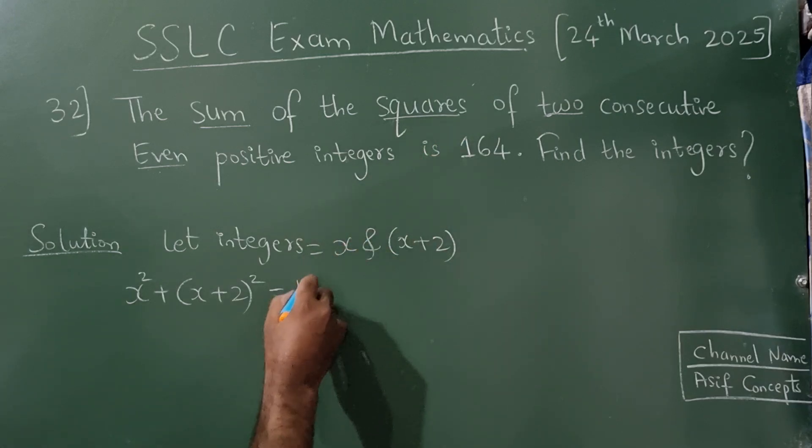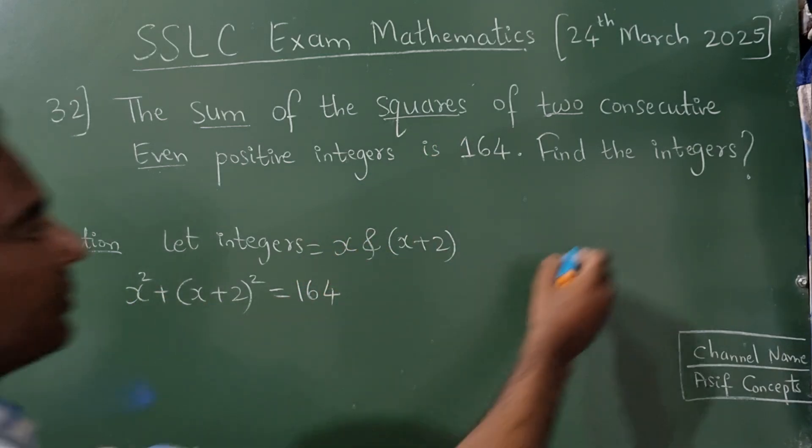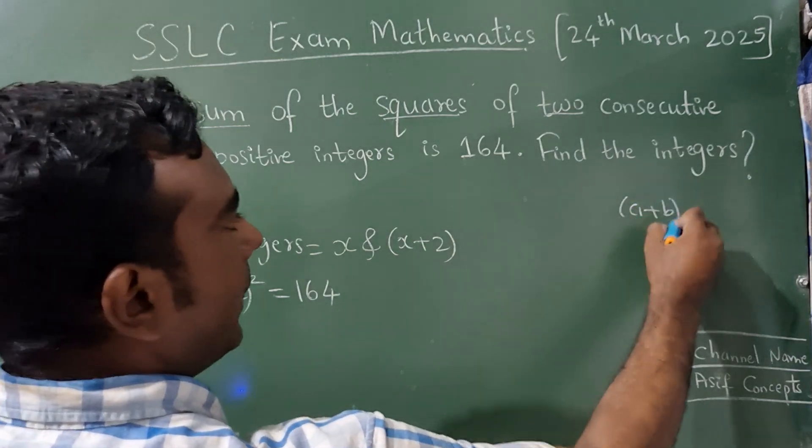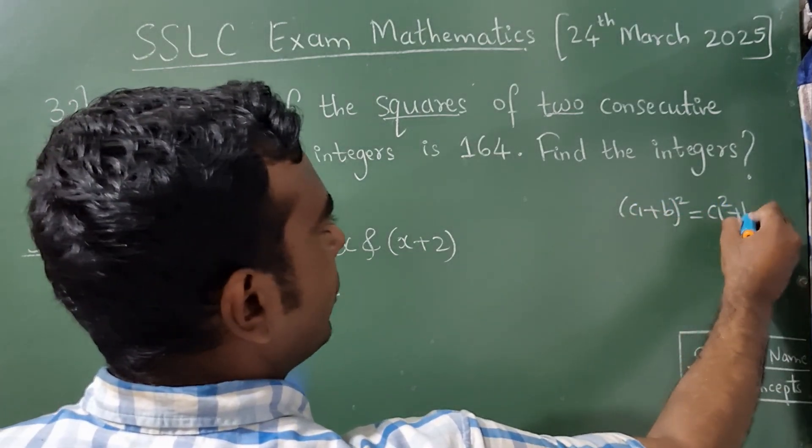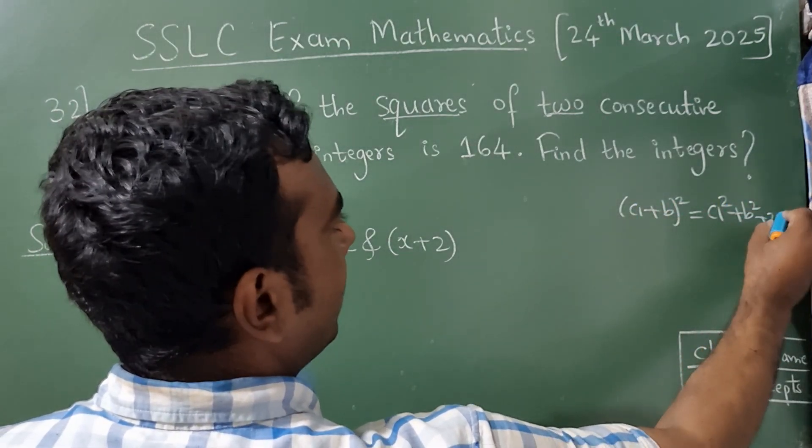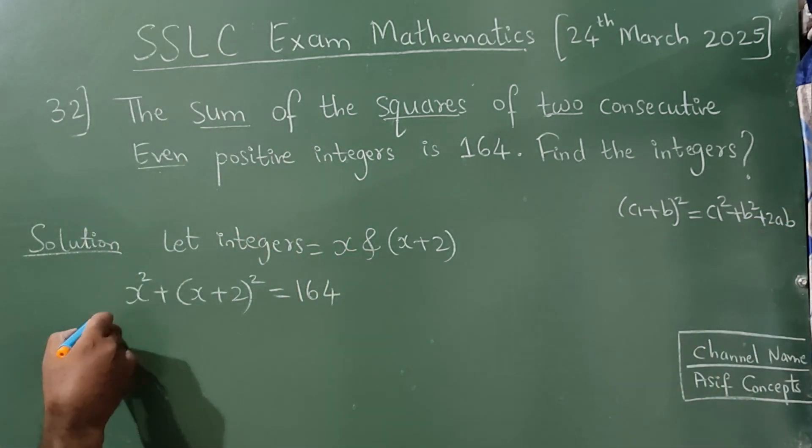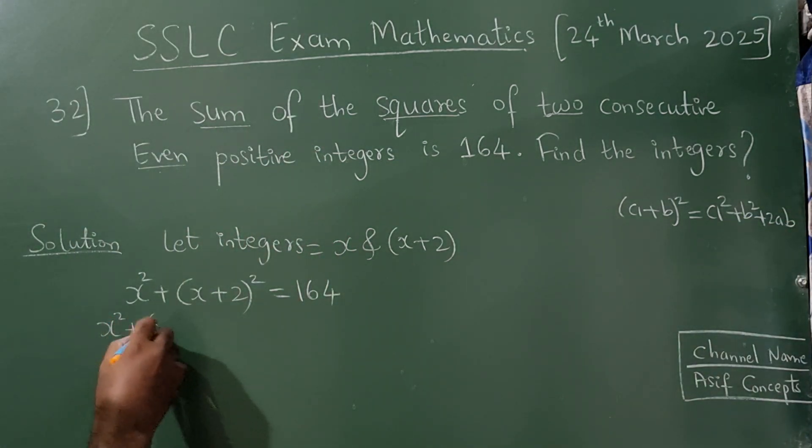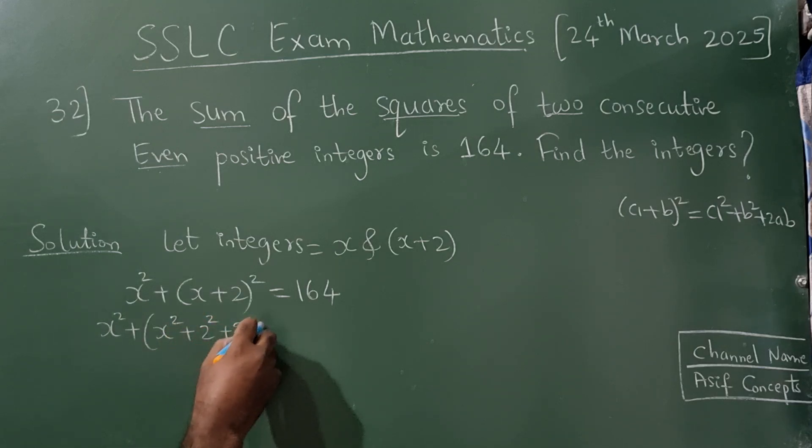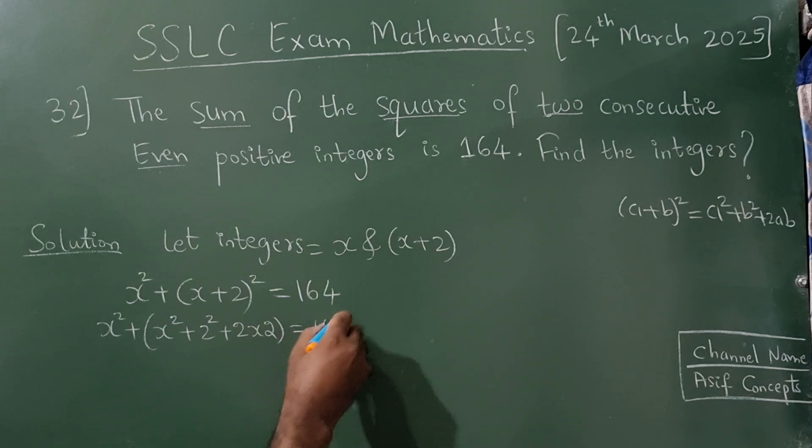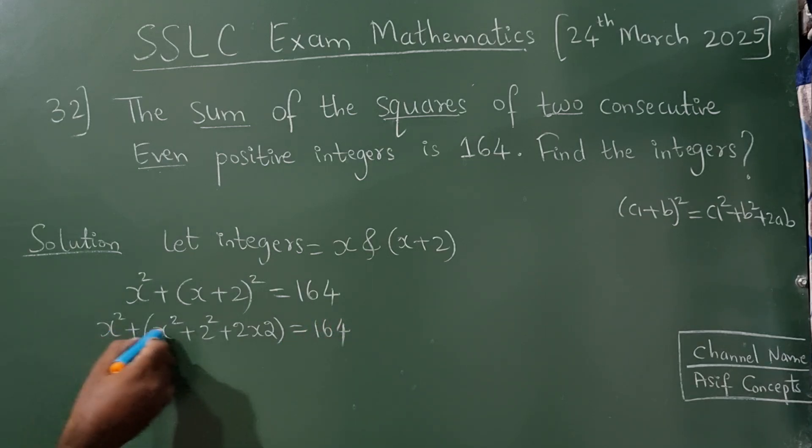Now as you all know, a plus b square formula is a square plus b square plus 2ab. Now here, x square plus x square plus 2 square plus 2 into ab is equal to 164.